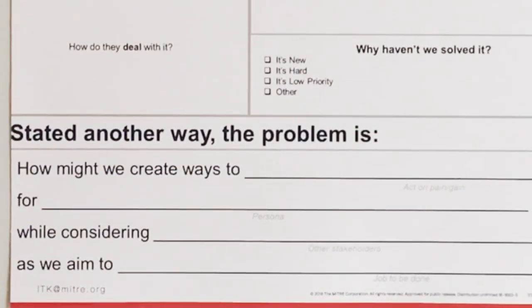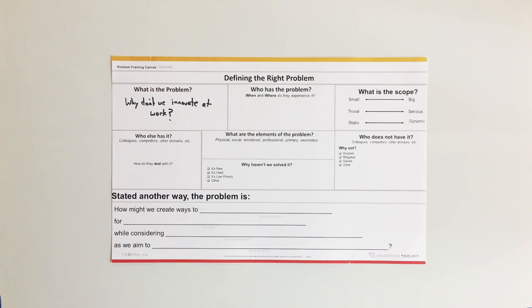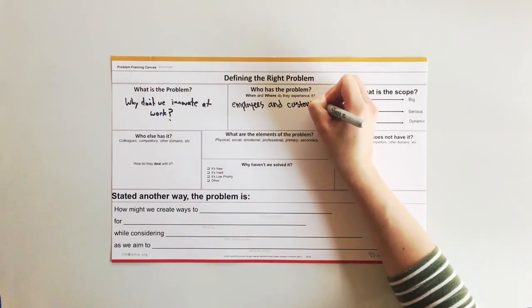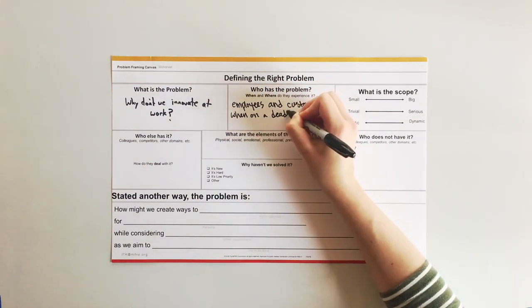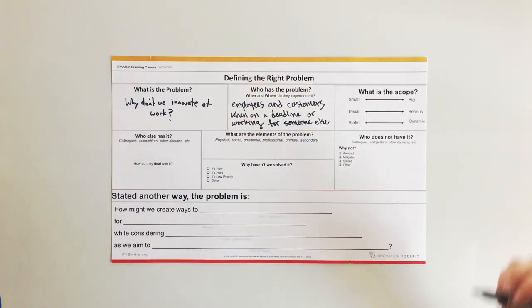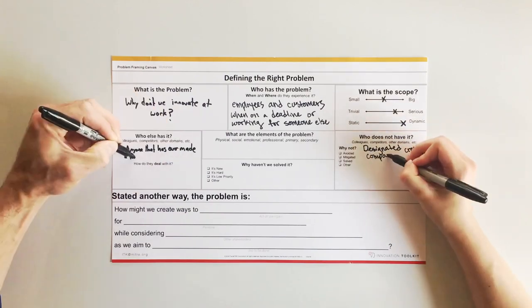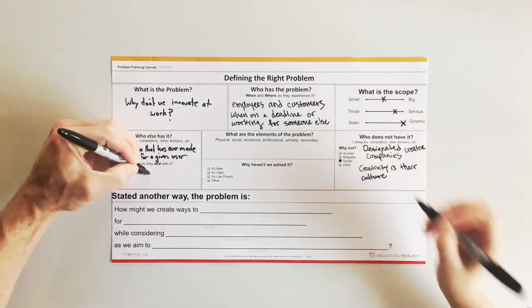The first question on the tool is, what is the problem we are trying to solve? This helps the team begin with the end in mind. Why have we not solved it? This question can help deepen the team's understanding of the situation.